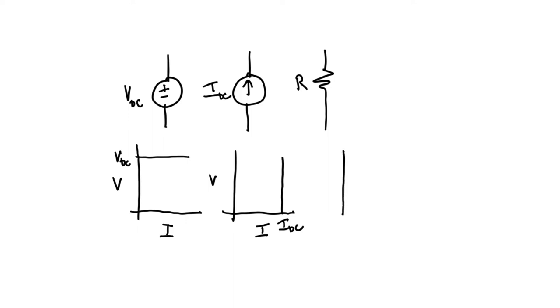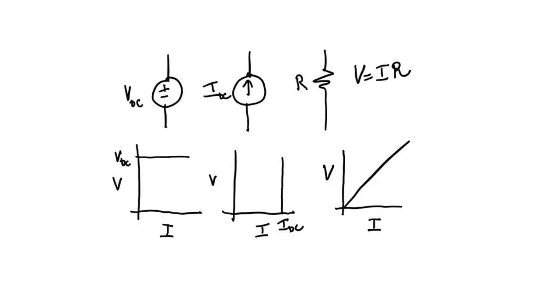With a resistor, we might remember Ohm's law: V equals IR, which means that if I plot V versus I for a resistor, I'm just going to get a straight line where the slope of that line depends on the resistor. If I use a very large resistance, then the slope would be large. If I use a very small resistance, then the slope would be down here. All three of these are examples of linear circuit elements.